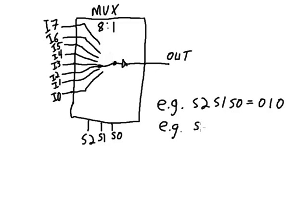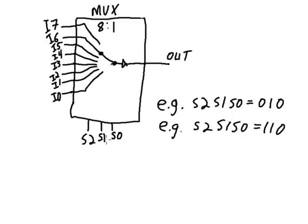Or, for example, if S2, S1, S0 is equal to 1, 1, 0 — that's the value of 6 — then input number 6 is going to be connected to the output, and only I6's value is going to matter. With three select bits, S2, S1, S0 can represent values from 000 up to 111 — eight different values — so I'm able to select from eight different inputs to map to the output.